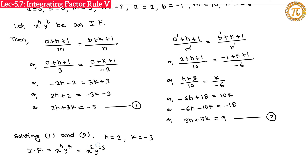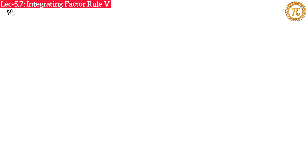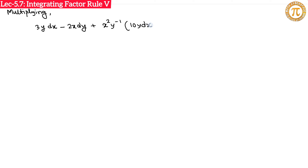Now we multiply the integrating factor x² y^(−3) with the given equation: (3y dx − 2x dy) + x² y^(−1)(10y dx − 6x dy) = 0. After multiplying, we then use the solution formula for an exact equation.